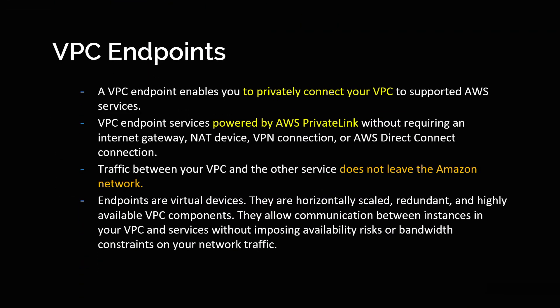Let's revisit what we've seen so far. VPC endpoints enable you to privately connect your VPC to supported AWS services. You need to check which services are supported — for gateway endpoints it supports only S3 and DynamoDB. The VPC endpoint service is powered by AWS PrivateLink, which is the private network other than the internet through which resources communicate. You don't require an internet gateway, NAT device, or VPN connection to communicate with other AWS resources.